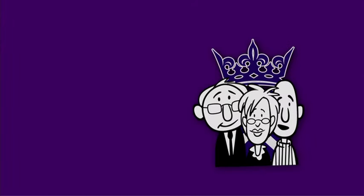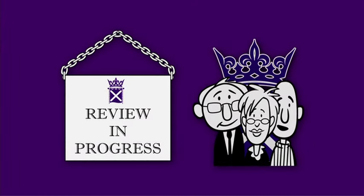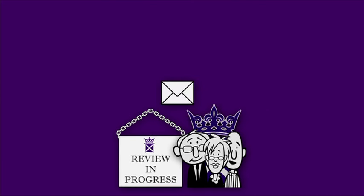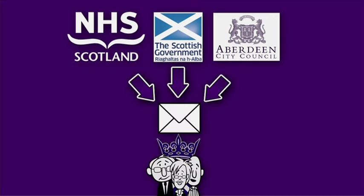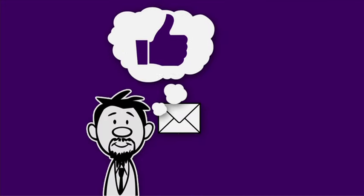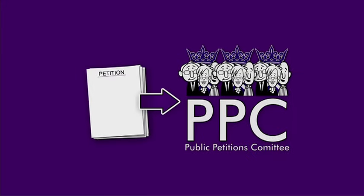The committee will consider your petition and decide what action it wishes to take. The committee may write to any key bodies about the issues you raise, for example the Scottish Government, local councils or health boards. Once responses are received, these will be copied to you and you'll be given the chance to respond in writing. Your petition and any views received will then go back to the committee for further discussion on what action to take.